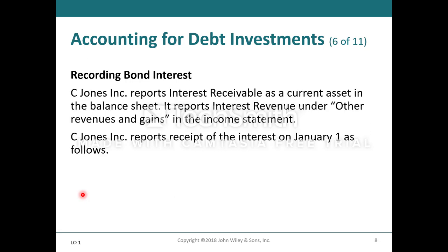C Jones Incorporated reports the interest receivable as a current asset on the balance sheet and reports the interest revenue under other revenue and gains on the income statement. On January 1st, when they actually receive the payment, they debit cash for $4,000 and credit the interest receivable for $4,000 that was originally on the books.